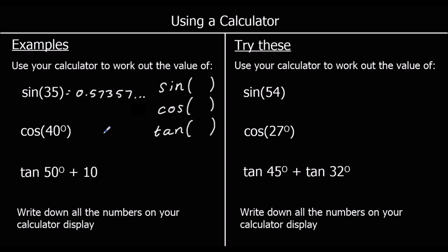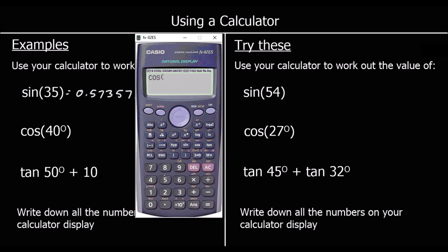The second one: cos 40 degrees. It says degrees, but that doesn't make any difference — we don't type the degree sign into the calculator. So it's cos 40, and that's 0.76604 and so on.